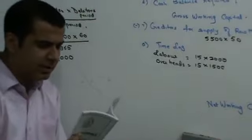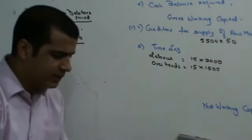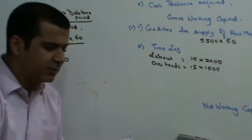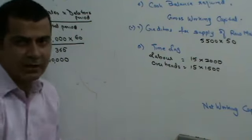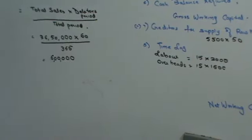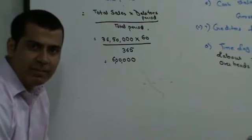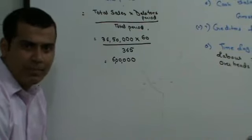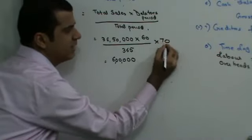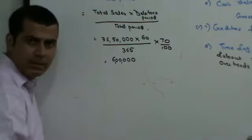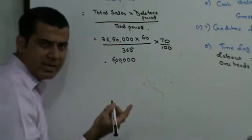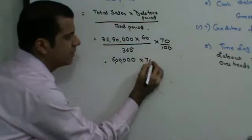Last adjustment. They are saying that 30% of the sales is for cash. Now if 30% of the sales is for cash, that means debtors have already paid you 30%. So the balance amount due from them is going to be 70%. So whatever is the cash, the balance is going to be debtors.